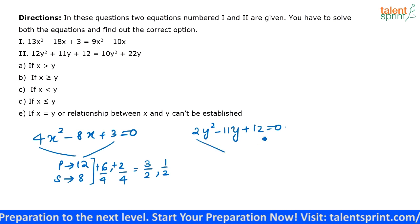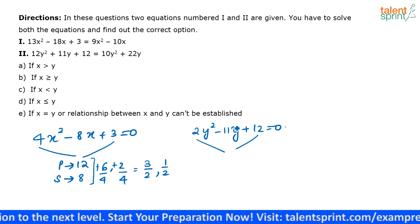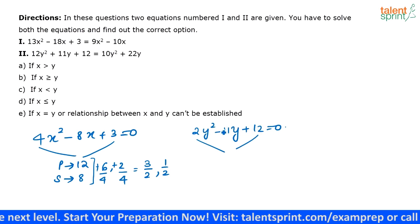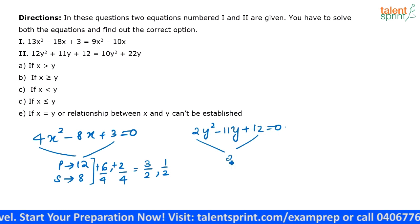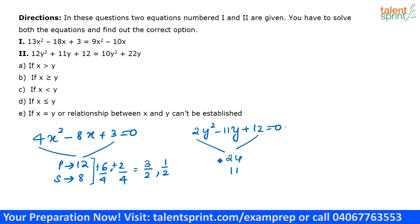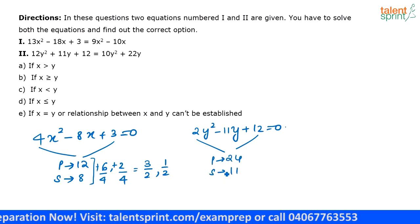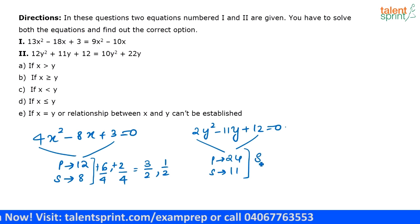Now next one, you have another equation here. So 12 times 2 is 24. So you have two numbers whose product is 24 and their sum is 11. So what can be the two numbers? It has to be 8 and 3.